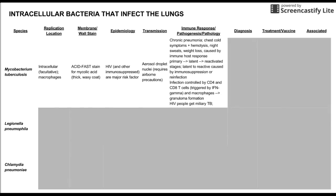The immune response, pathogenesis, and pathology for MTB: MTB causes chronic pneumonia. A person comes in with chest cold symptoms and hemoptysis — they're coughing up blood. They get night sweats and weight loss. Most of these symptoms are caused by the host immune response. There are a couple of stages: a primary stage, a latent phase where the body isolates the tuberculosis, and then that isolated tuberculosis can reactivate.